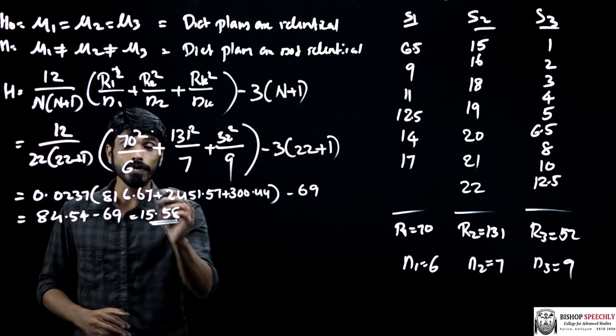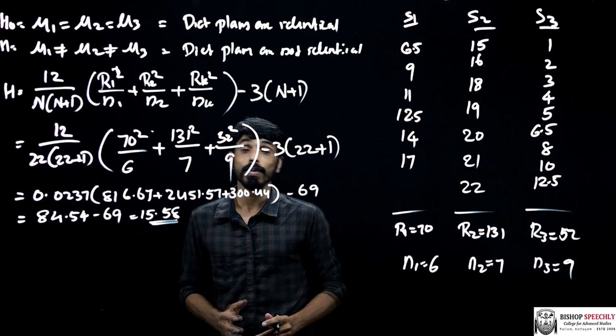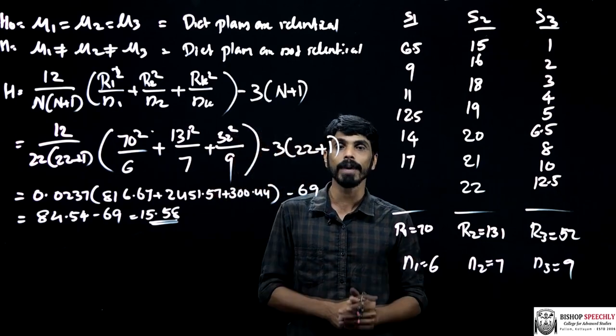By solving this, we will get the value of 15.58 as the calculated value of H for Kruskal-Wallis test. We have to compare this value with the table value.